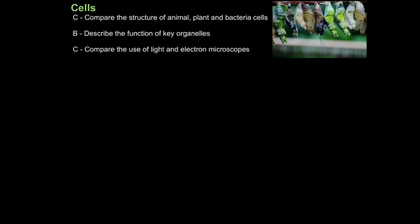In this lesson we're going to look at cells. The first aim is to compare the structure of animal, plant and bacteria cells, then describe the function of key organelles, and then finally compare the use of the light and electron microscope.